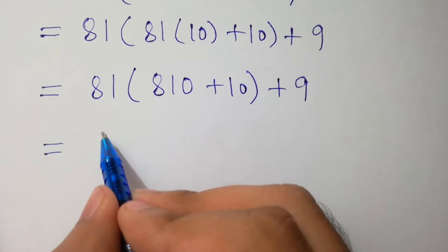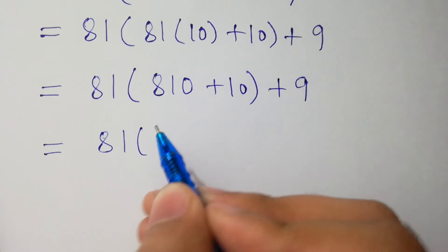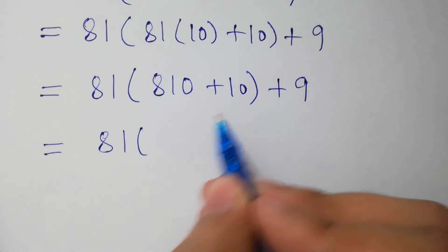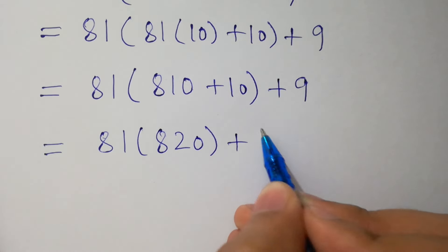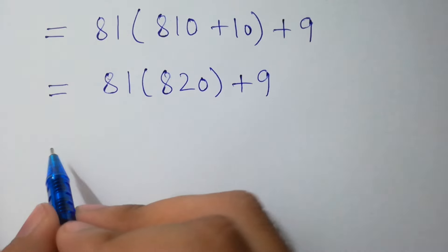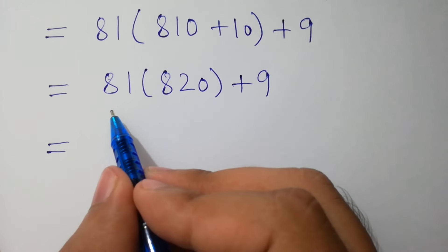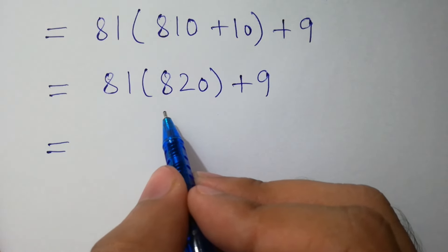Next step is very simple: 81 as it is, 810 plus 10 equals 820, plus 9. And here 81 times 820 equals 66,420 plus 9.